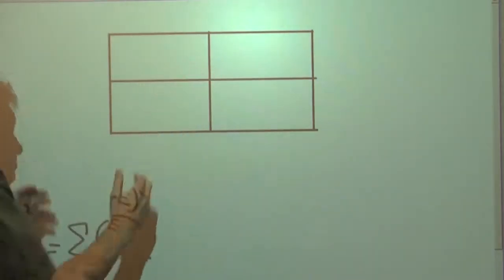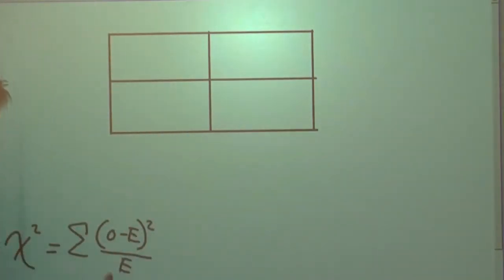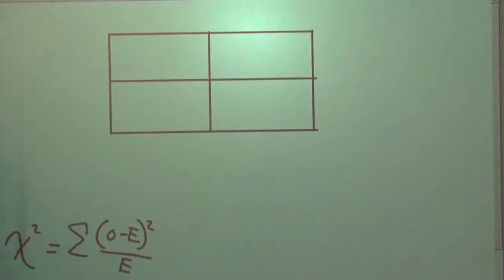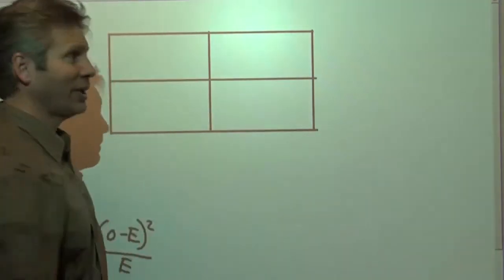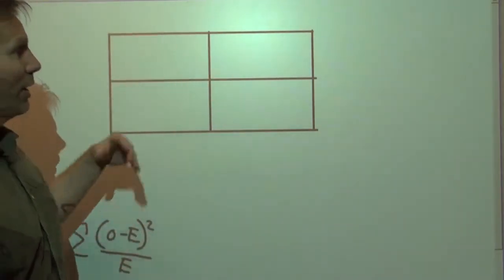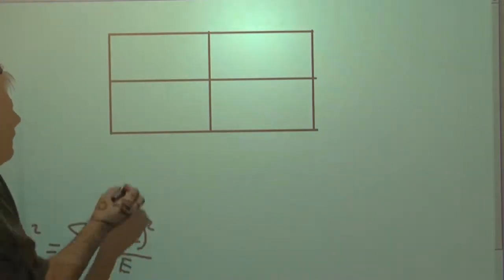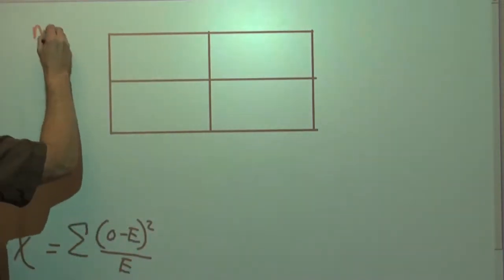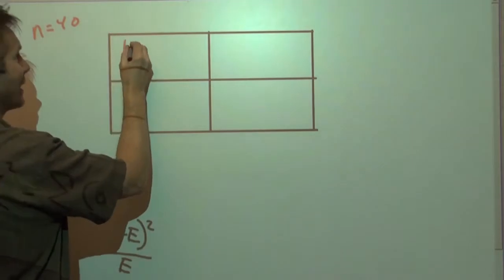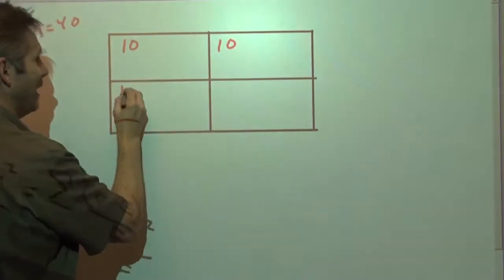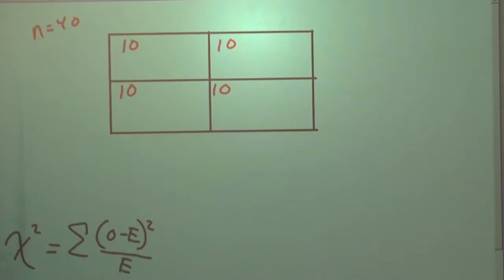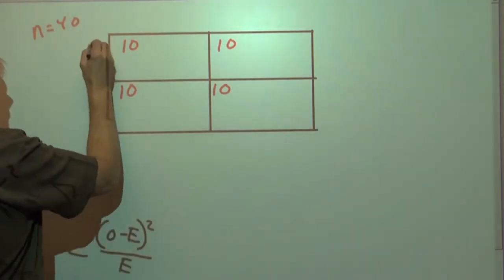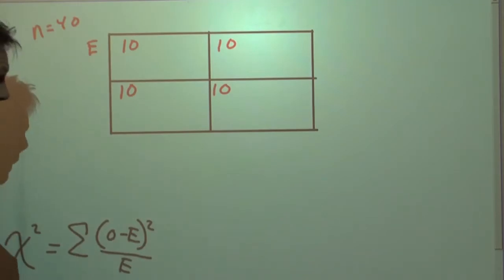We're going to see how often the frogs land in these four different quadrants right here. If we were to predict that they would land in each square an equally likely amount of times, then if we were to launch 40 frogs, we would expect to have 10 landings over those 40 times, 10 landings in each square.